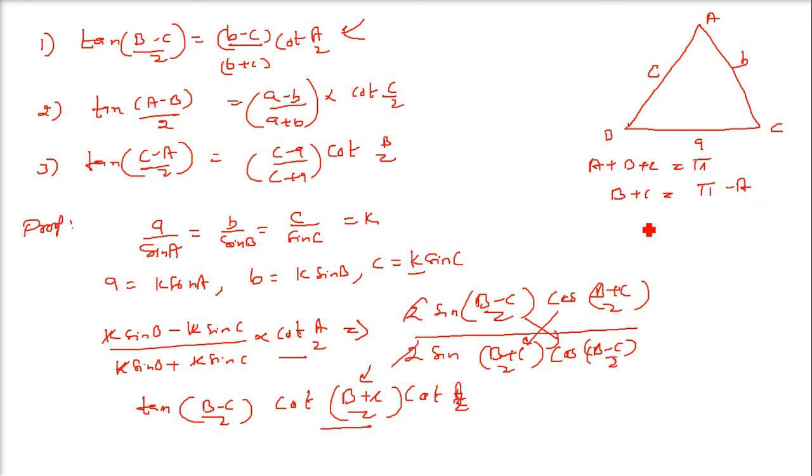So what this term will become cot (b plus c)? I am writing pi minus a. So what do you get? Cot of (pi by 2 minus a by 2). Cot of (90 minus theta) or (pi by 2 minus theta) is tan theta. So it will be tan a by 2.